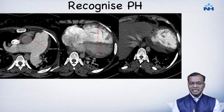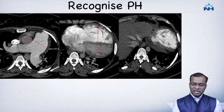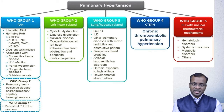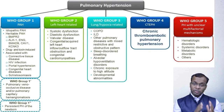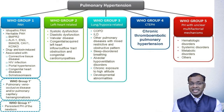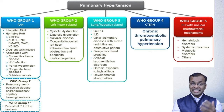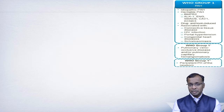Once we've established pulmonary hypertension on CT, we then investigate its cause. This is the standard WHO classification grouping patients into different categories according to the etiology of pulmonary hypertension. Let us go through them one by one, and I will show you the role of CT in each group.